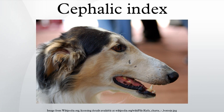The cephalic index was defined by Swedish professor of anatomy Anders Retzius and first used in physical anthropology to classify ancient human remains found in Europe. The theory became closely associated with the development of racial anthropology in the 19th and early 20th centuries, when prehistorians attempted to use ancient remains to model population movements in terms of racial categories. Human populations were characterized as either dolichocephalic, mesocephalic, or brachycephalic.